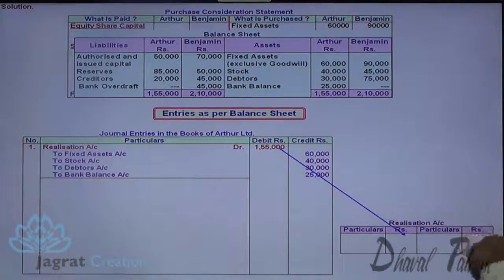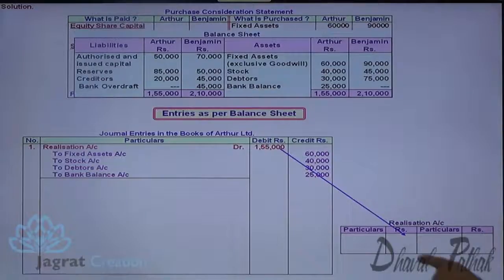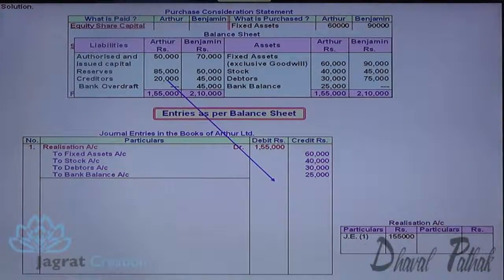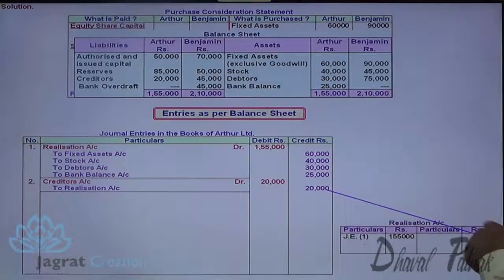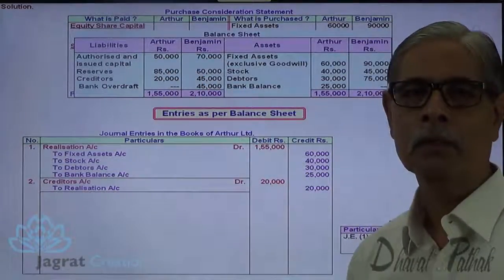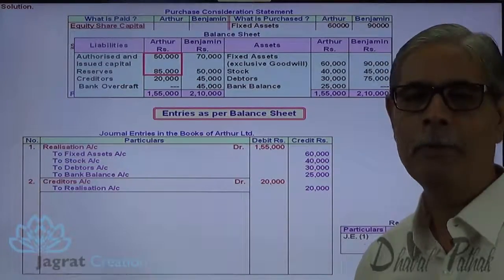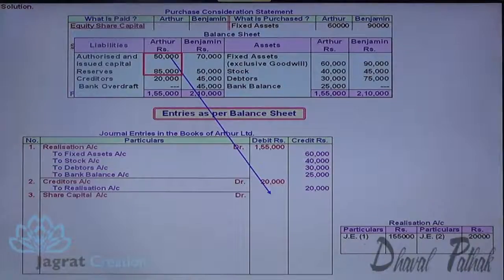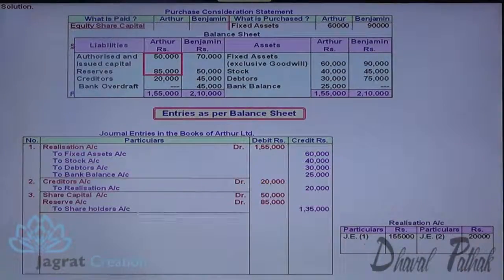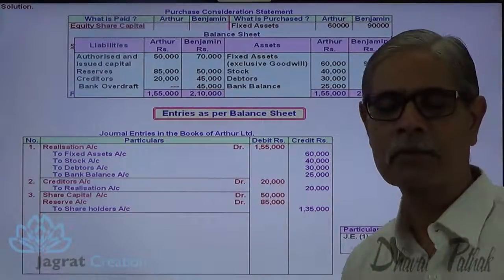A rough realization account is prepared as a working note to find the profit on realization of assets and payment of liabilities. Realization account is debited by 1,55,000. Liabilities are also transferred to realization account — when transferred, liabilities accounts are debited: Creditors Account Dr. to Realization Account Cr. 20,000. Share capital and reserves are transferred to shareholders account: Equity Share Capital Dr., Reserves Dr. to Shareholders Account Cr. — being capital and reserves transferred to shareholders account.